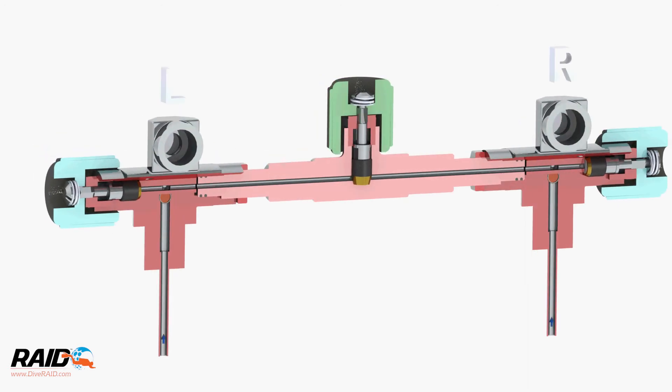There are three valves: the left post marked with an L, right post marked with an R, and isolation valve.